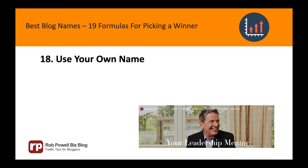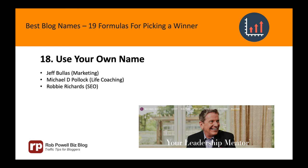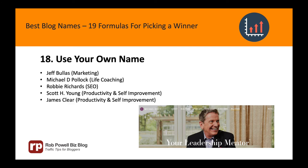Formula 18: Use your own name. Some people advise against using your name as the name of your blog, because you're giving up an opportunity to tell people what your blog is about — and that's a valid point. But here's an advantage: blogs evolve. A year down the track you may decide you want to change your focus slightly, or even the entire topic. That's fine if your blog name is simply your name, but not so easy if you chose a very specific and descriptive name. Here are some successful blogs named after their owners: Jeff Bullas, Michael D. Pollock, Robbie Richards, Scott H. Young, James Clear, Michael Hyatt, Matthew Woodward.